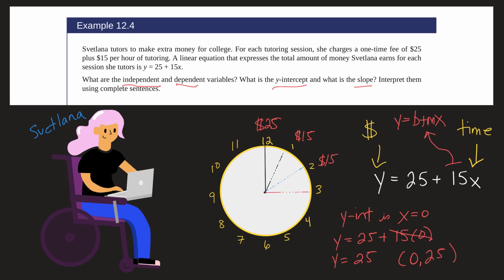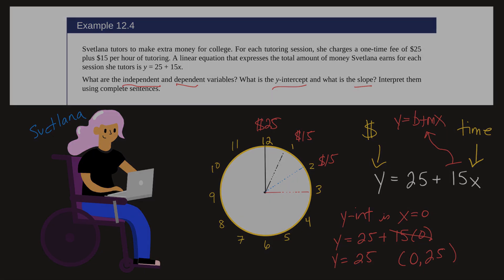So time is the independent variable and money is the dependent variable. The y-intercept is 0,25 on a graph and the slope is 15 for $15 per hour.